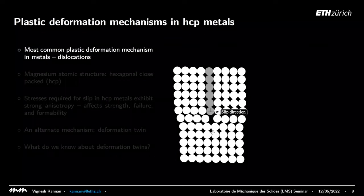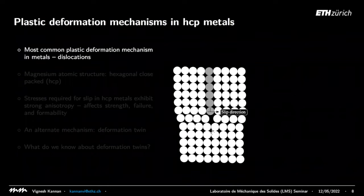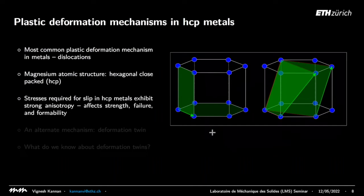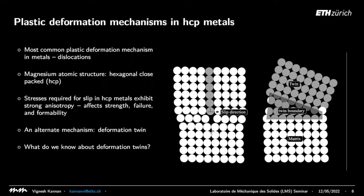This is a primer on plastic deformation in hexagonal close-packed materials. The most common plastic deformation mechanism in metals is called a dislocation — a line defect that disturbs the periodicity of atoms. You have an extra half plane of atoms, and when you apply a shear stress, you move this dislocation. In magnesium, with a hexagonal close-packed crystal structure, dislocations typically move along specific atomic planes. It's much easier to drive dislocations in the plane of the hexagonal crystal than out of plane. This anisotropy results in the activation of an alternate mechanism called a deformation twin.